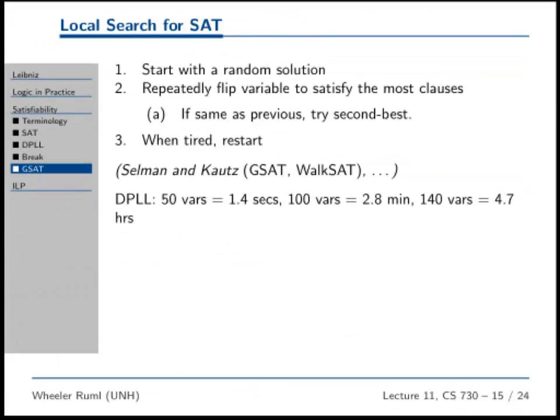DPLL is a pretty reasonable algorithm. So if you give it a formula over 50 variables, you can solve that in just a few seconds. The scaling behavior is a little worrisome. It is an NP-hard problem. So as you go to 100 variables, now we're taking a few minutes. You go to 140 variables, now we're talking a few hours. But if you happen to have like 500 variables, you're hosed with DPLL, unfortunately.